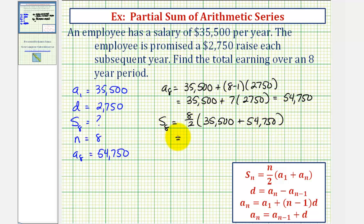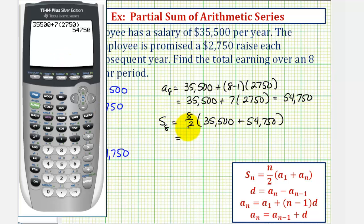Let's go back to the calculator. Notice here we have eight divided by two, which is four. So we have four times the quantity 35,500 plus 54,750, which gives us 361,000.